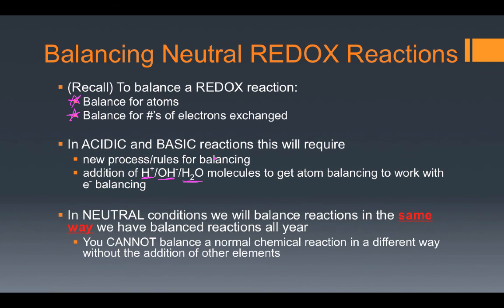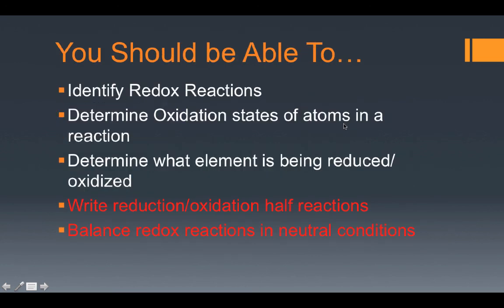The great news is that in neutral conditions — what we're really focusing on today — the balancing we're going to do is exactly the same as the balancing you've done all year long. There's really nothing different. The reason is that we cannot balance a chemical reaction in any way other than that which balances the atoms. Because we're not introducing any new elements, there's no different way to combine things — they only have one possible answer. Without the addition of other substances like we deal with in acidic and basic conditions, there's really no possible way to get another answer. So I'm not going to go over examples with balancing neutral reactions — it's something you've been doing all along and all the same rules apply.